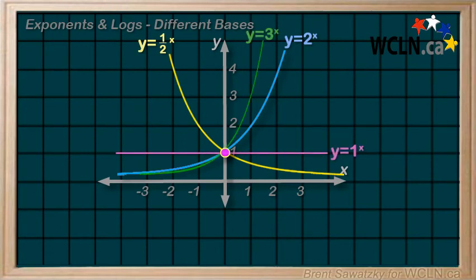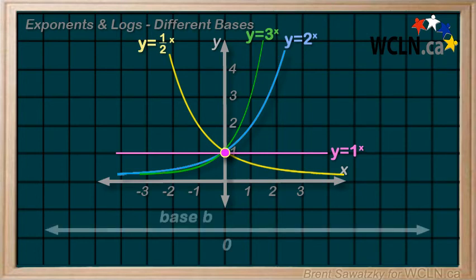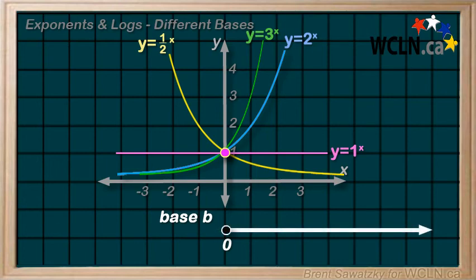In this tutorial, we looked at the graphs of exponential functions. We started with our familiar base of 2 and then we looked at what happens if that base changes. Let's put our base b on a number line. Thinking back to our restrictions around exponential functions, b has to be greater than 0 and it can't be 1. So let's eliminate the negatives and also the 1.